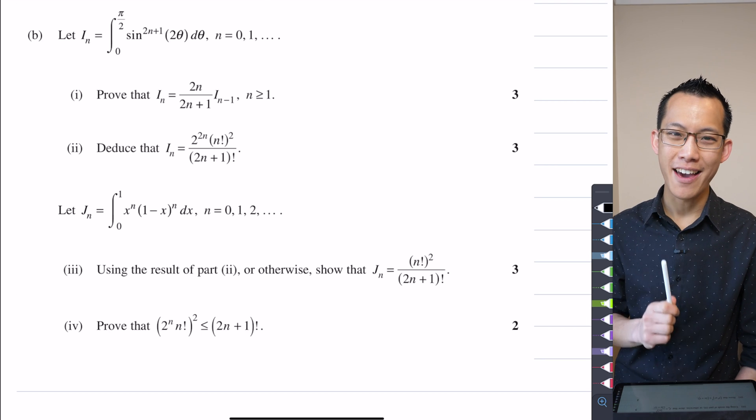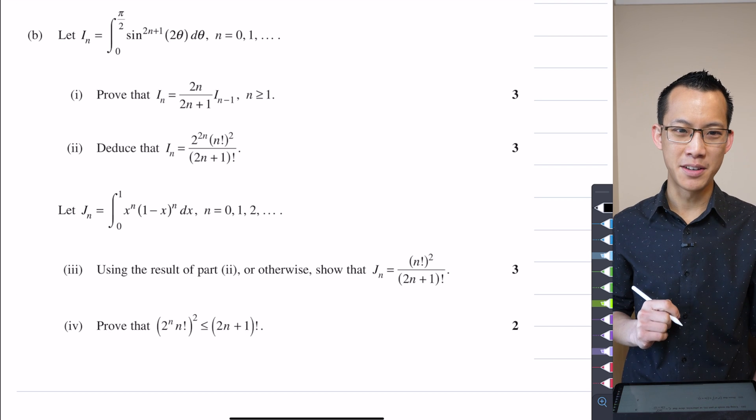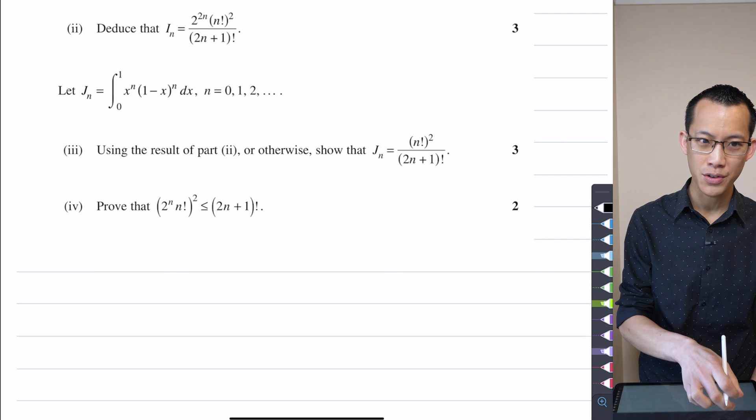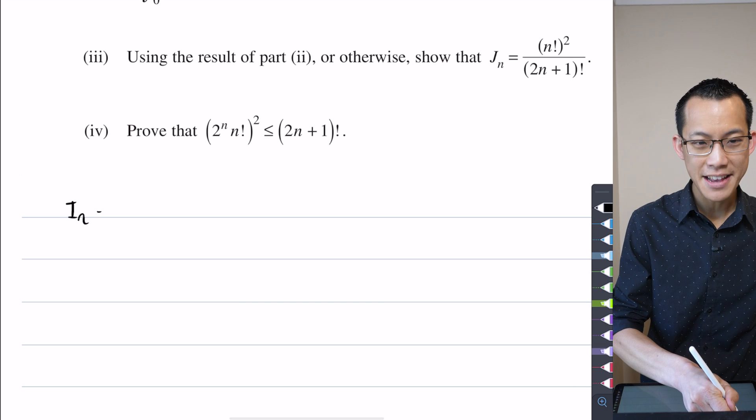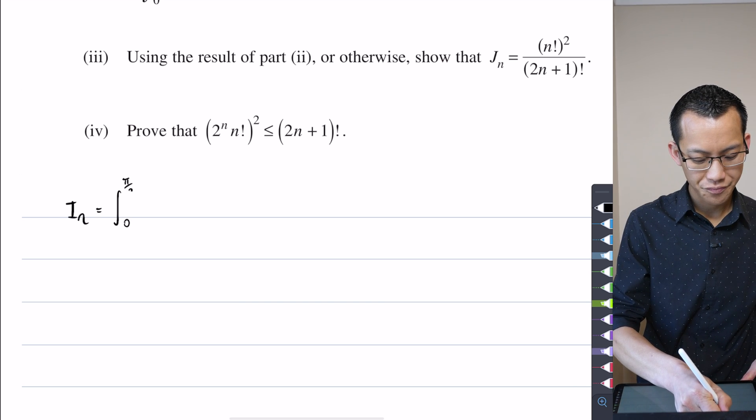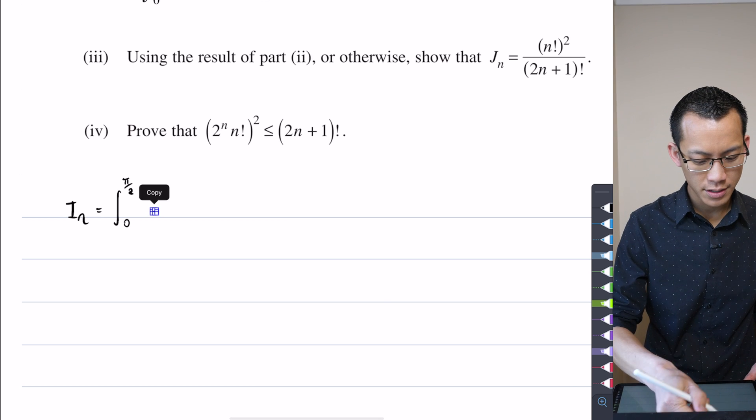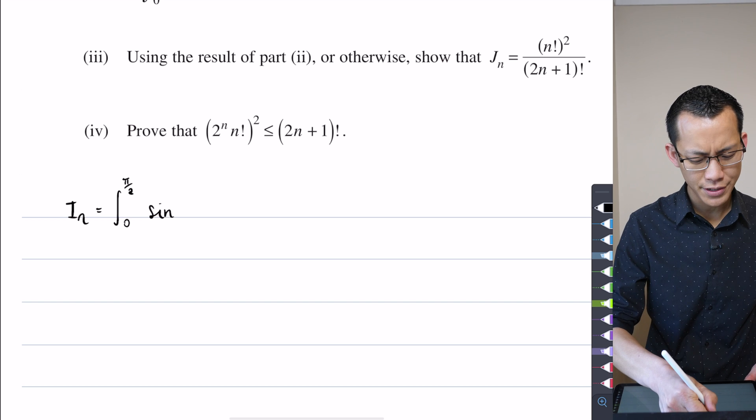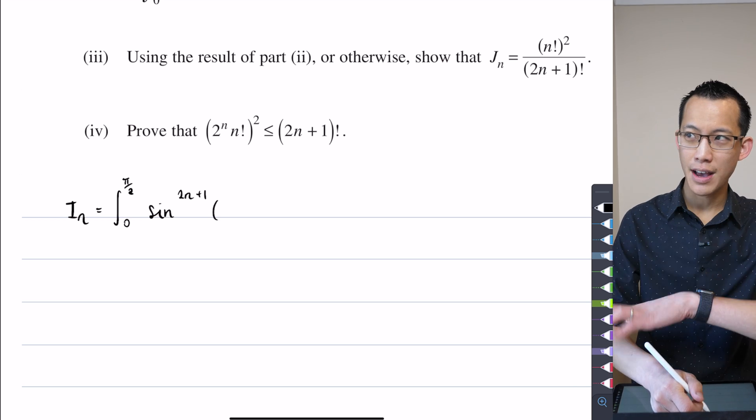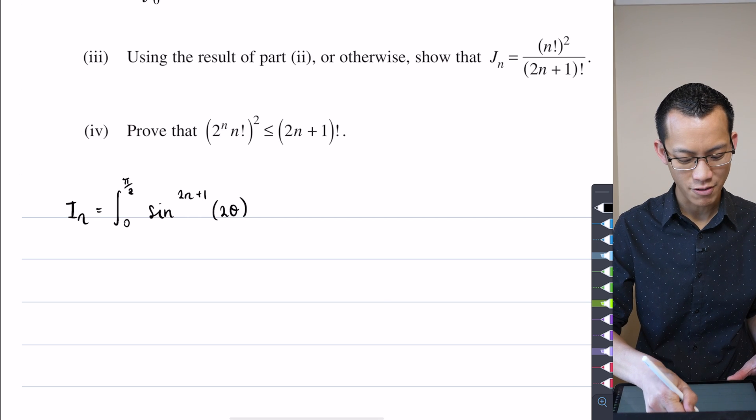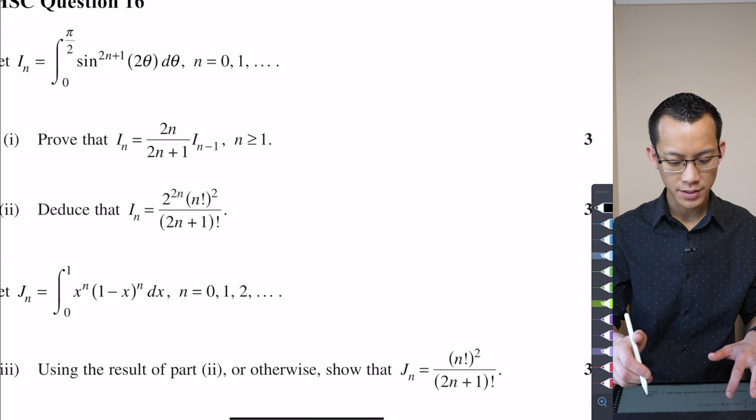Part one, prove that i_n equals 2n/(2n+1) times i_(n-1). So this is what we're trying to work with, and I'm just going to jot down that integral for starters. i_n equals, we're going from 0 to π/2, and that will obviously be pretty important later on, and it's this weird sine raised to this awkward looking power, 2n+1, and it's not even sine of a nice angle, it's sine of a double angle for some reason,